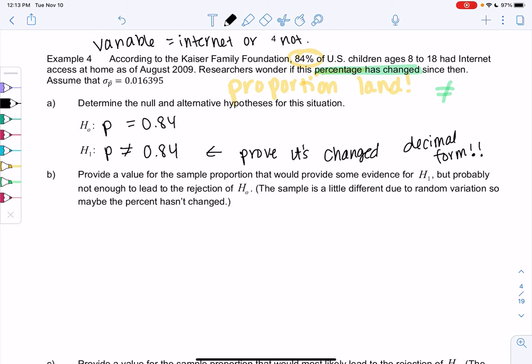So now we want to provide a sample proportion. So we want to find a p-hat. That again provides some evidence, but not enough to convince us that it's changed. So, but probably not enough to lead to a rejection. So the sample is a little bit different due to random variation. So maybe it hasn't changed. So this is weak evidence. So something close to 84.